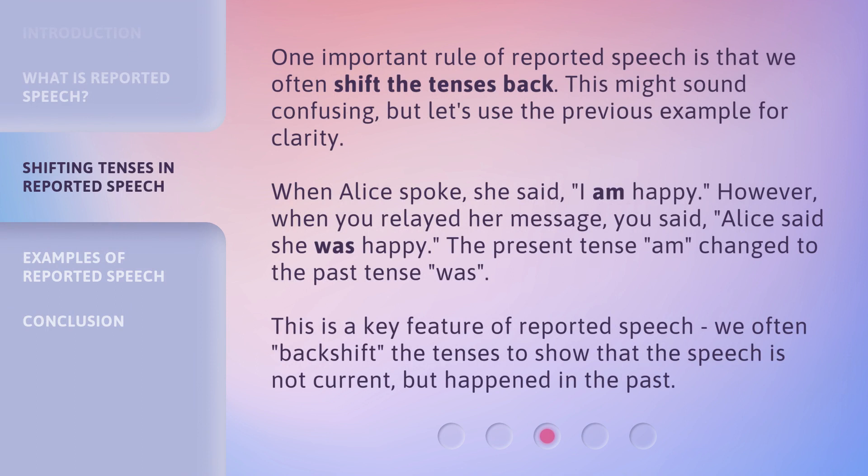One important rule of Reported Speech is that we often shift the tenses back. This might sound confusing, but let's use the previous example for clarity. When Alice spoke, she said, 'I am happy.' However, when you relayed her message, you said, 'Alice said she was happy.' The present tense 'am' changed to the past tense 'was.' This is a key feature of Reported Speech. We often backshift the tenses to show that the speech is not current, but happened in the past.